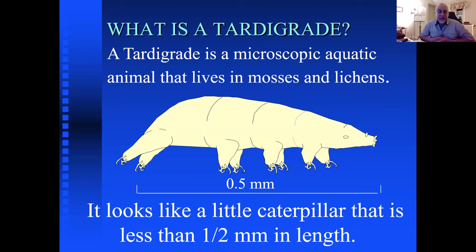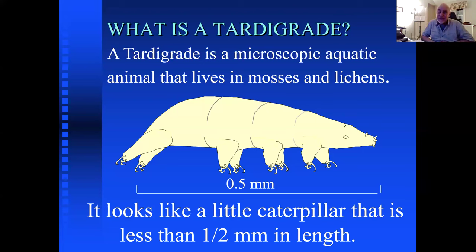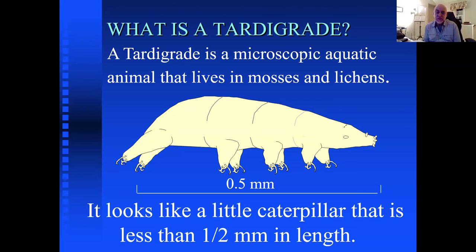How big are tardigrades? Most are between a half a millimeter and one millimeter — about the size of a period on a typed page. You might theoretically see one with the naked eye, but you wouldn't know it's a tardigrade. With a strong magnifying glass you might spot a little critter, but you really do need a microscope. Even an inexpensive low-power microscope is fine to see a tardigrade moving around with its little legs.